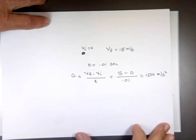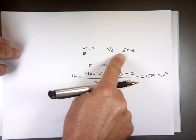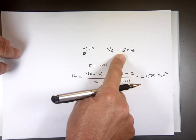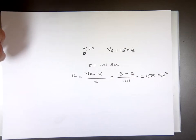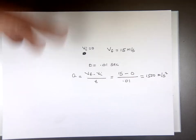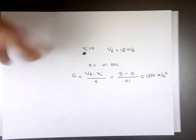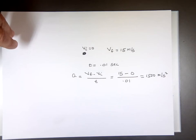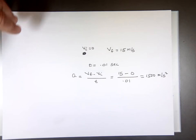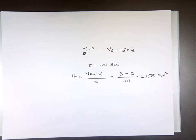Now we know when Tiger hits that ball it's not going 33 miles per hour — it's probably going 80 or 90 miles per hour. That's why the acceleration for a baseball or golf swing is in the thousands. A spaceship at takeoff has an acceleration of roughly 20 meters per second squared — twice gravity.